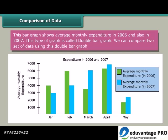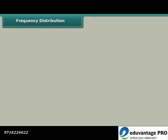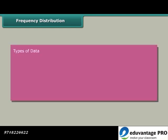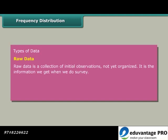This bar graph shows average monthly expenditure in 2006 and also in 2007. This type of graph is called double bar graph. We can compare two sets of data using this double bar graph.